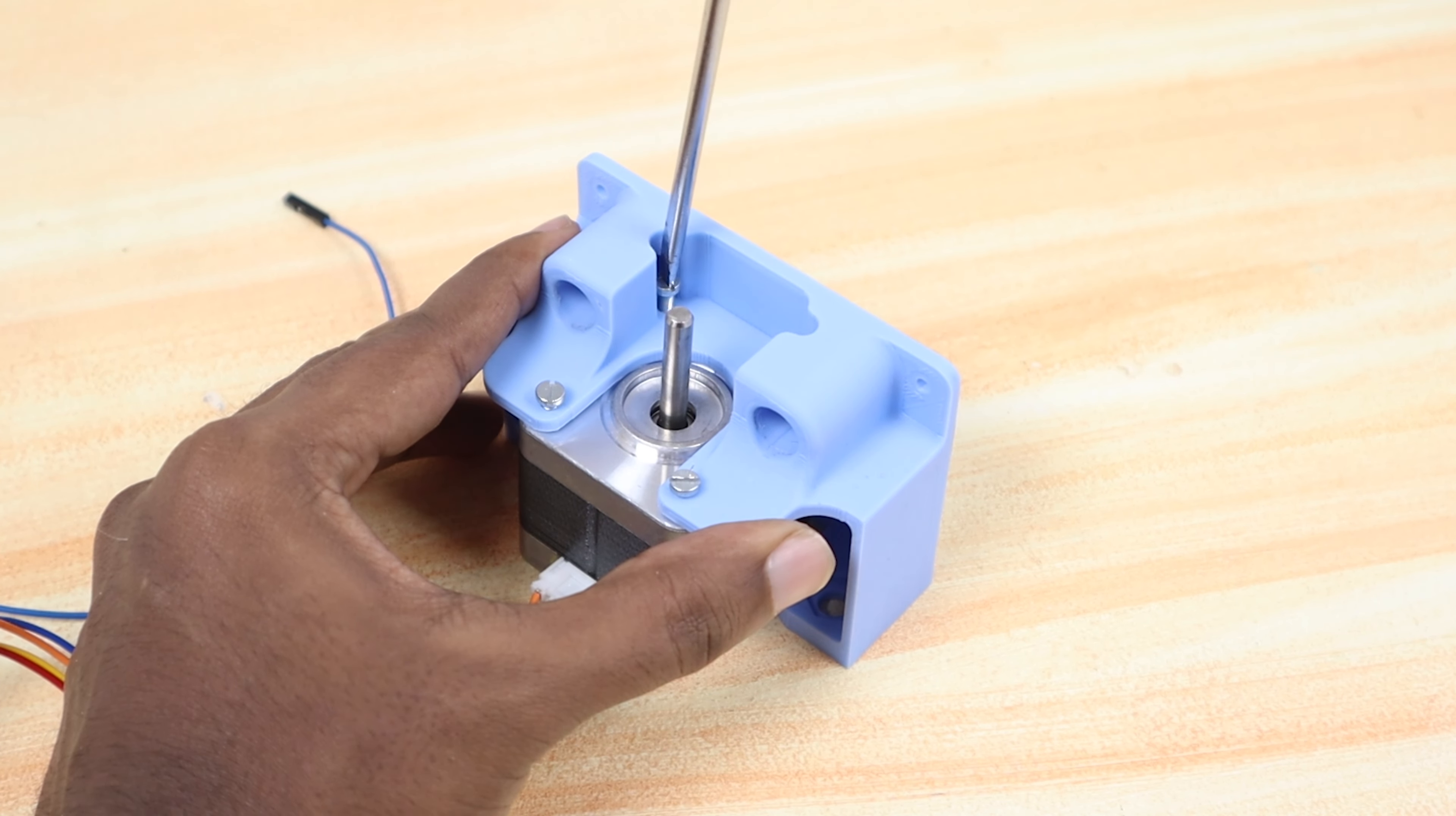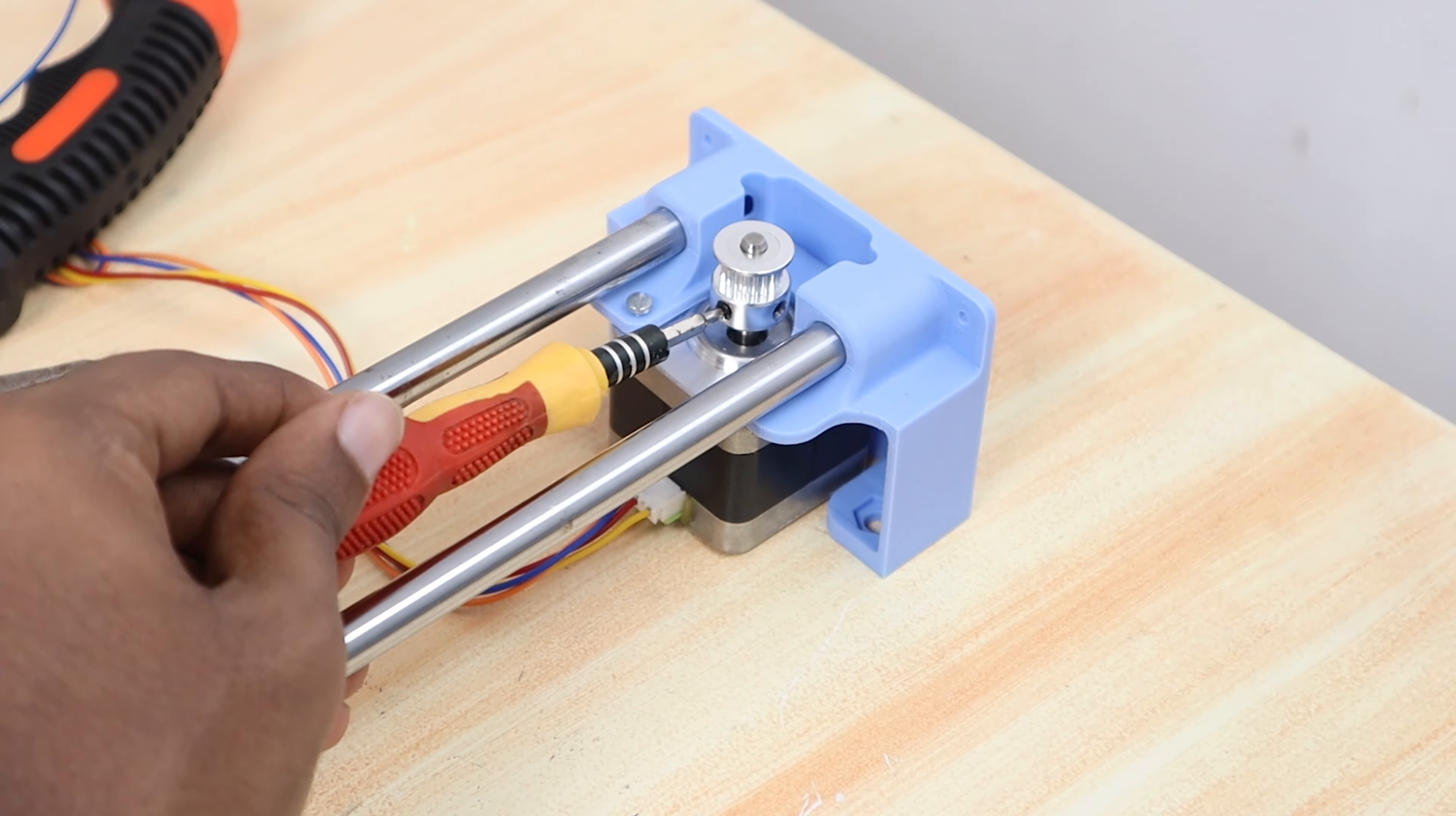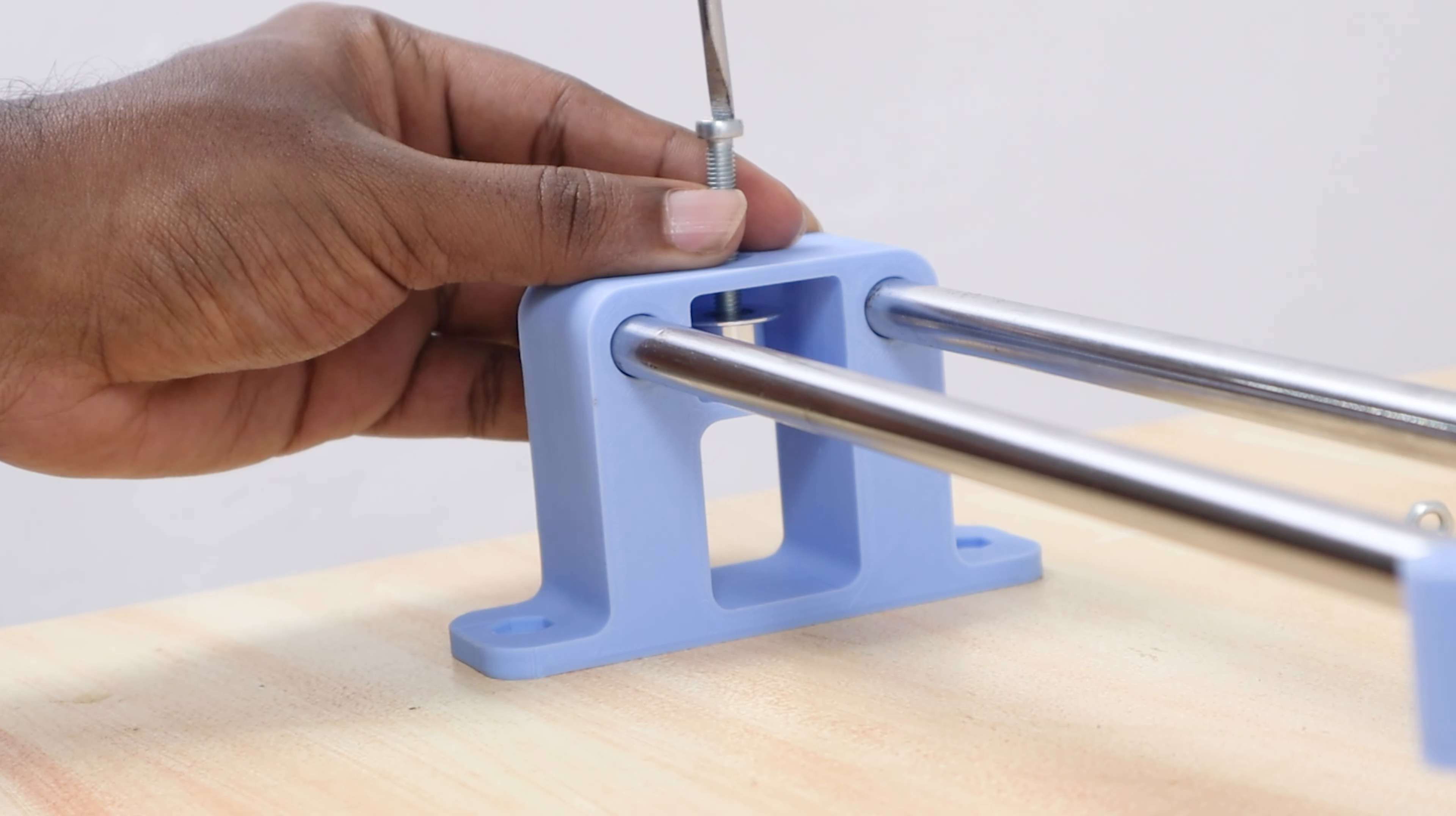The X axis motor is attached to this part using four M3 by 10mm screws and the free end of the linear rod is fixed to this motor holder. A timing pulley is added to the motor shaft by tightening the built-in screws. Then we added the idler pulley to the X axis support using M5 by 30mm screws.